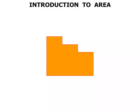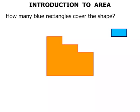This time we've got a shape here. What would you call that? Looks like the side of a staircase. And we've got a blue rectangle. The question is how many blue rectangles cover the shape?